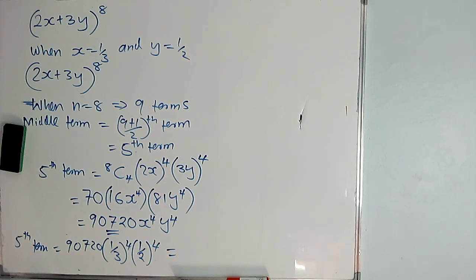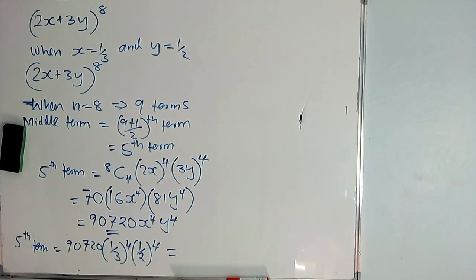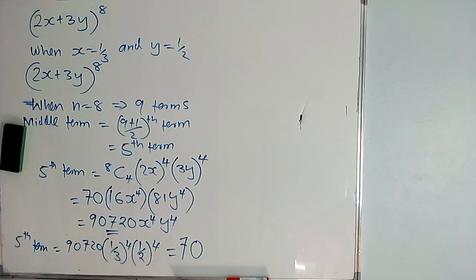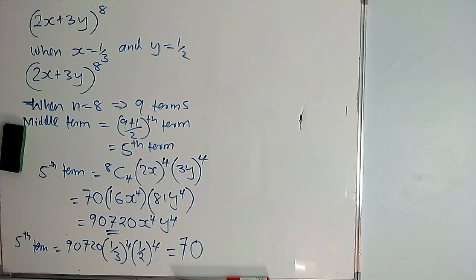What do you have? So that's why you are using the right bracket — you must have found it very fast. So when x is a third and y is a half, when you substitute those values in the given fifth term, you get 7.